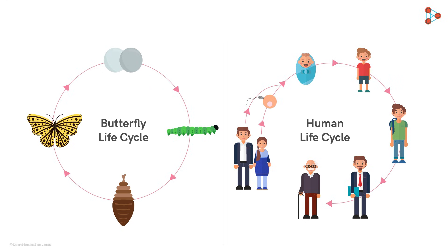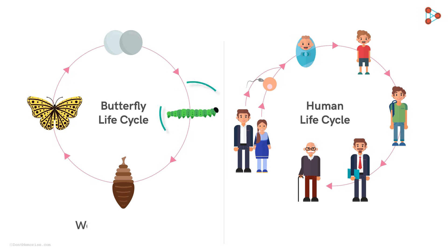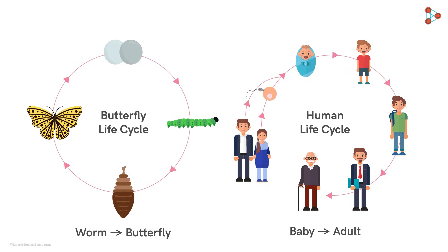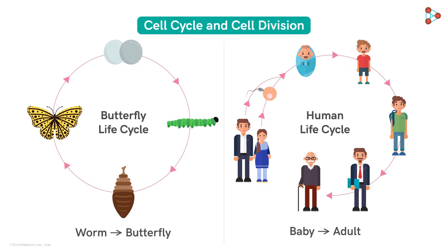Butterflies go through some spectacular life cycle transformations — from a lowly worm into a glorious creature that floats on the breeze. On similar lines, humans also follow a developmental pattern, going through a series of developmental stages from birth to adulthood. These transformations are mainly possible thanks to the process of cell cycle and cell division.